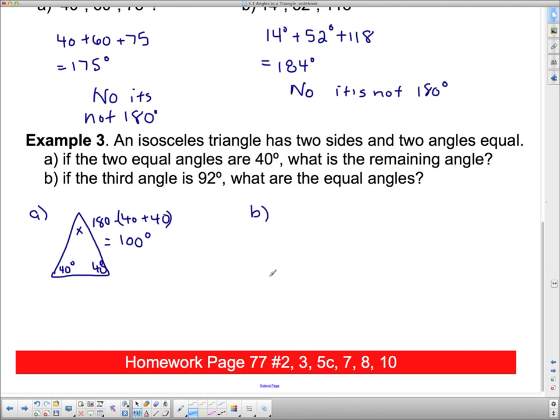Now part b is a little bit different because it says the third angle. So we're going to draw that out again. And it says the third angle, so we've got the two equal sides down here, and the third angle is 92 degrees. So what are the two equal angles? Well, let's see how much we have left over from that 92 degrees. 180 subtract 92 equals 88 degrees. So we've got 88 degrees left over for these two angles. And since they have to be equal, all I have to do is split that in two. So 88 degrees split in two is 44 degrees for each of these little angles.